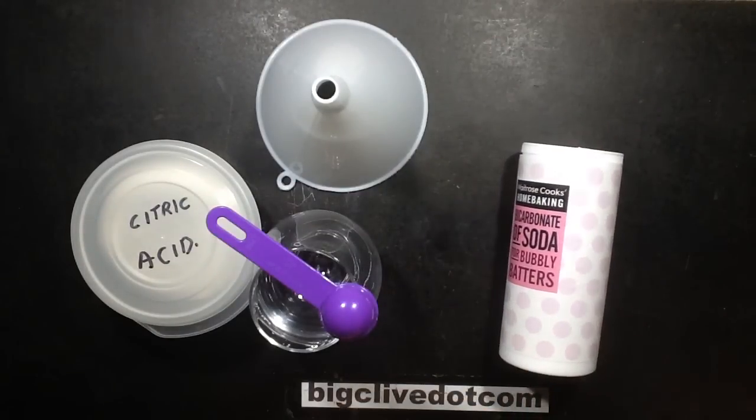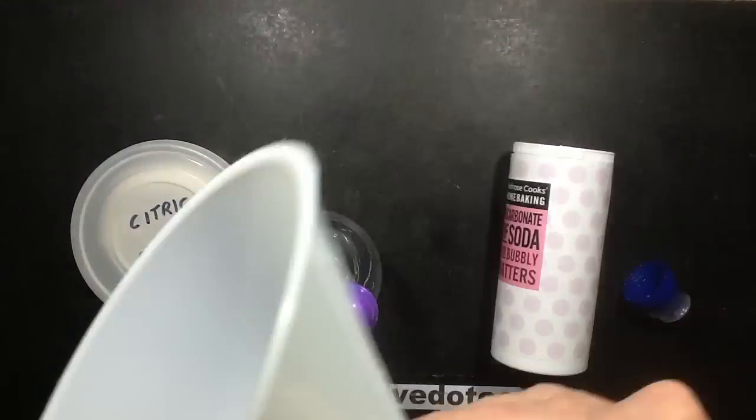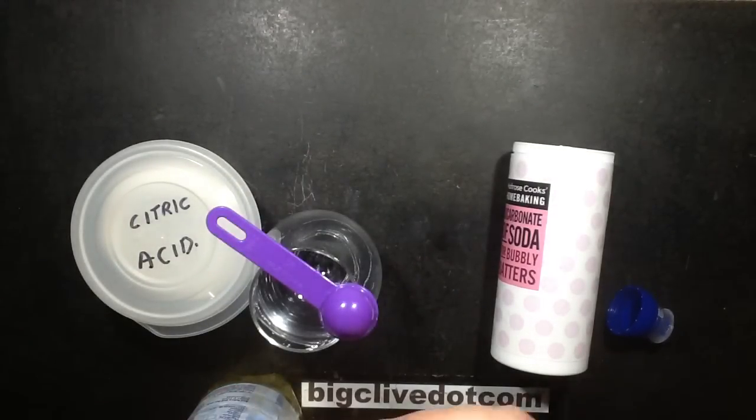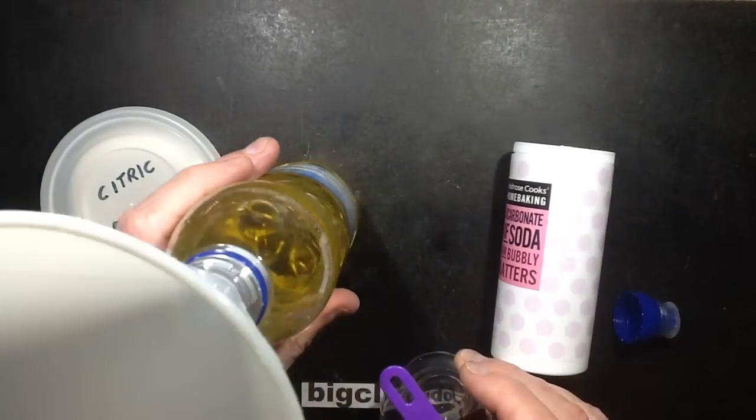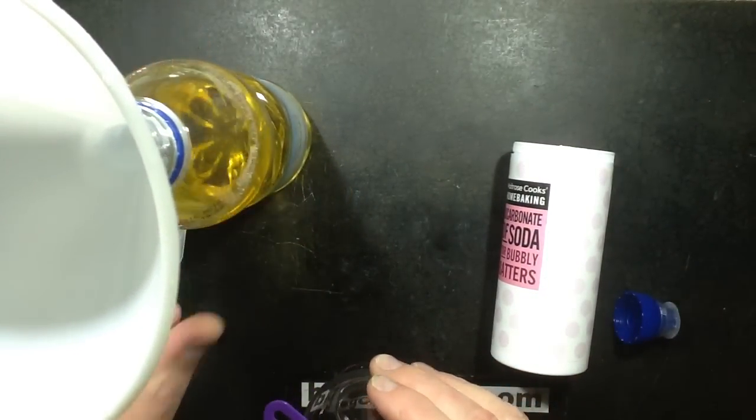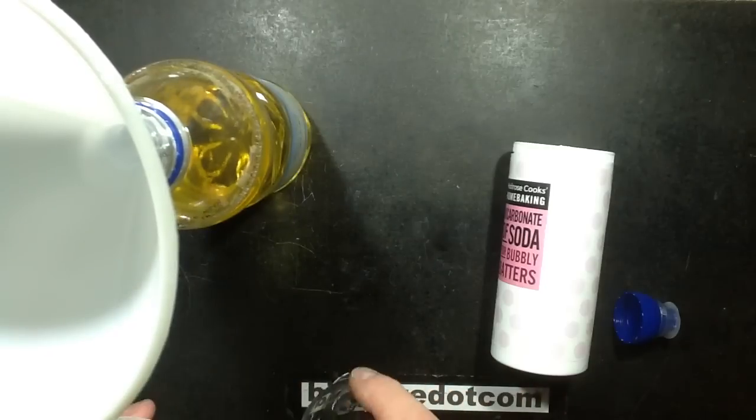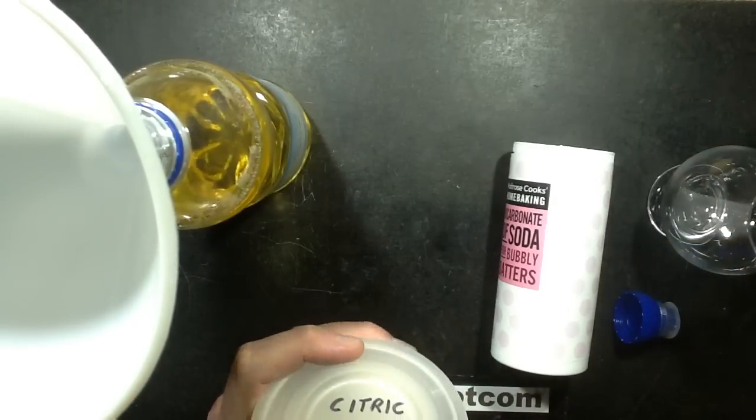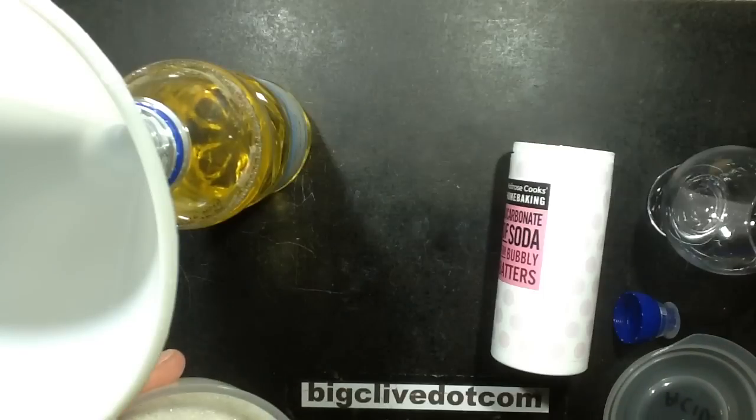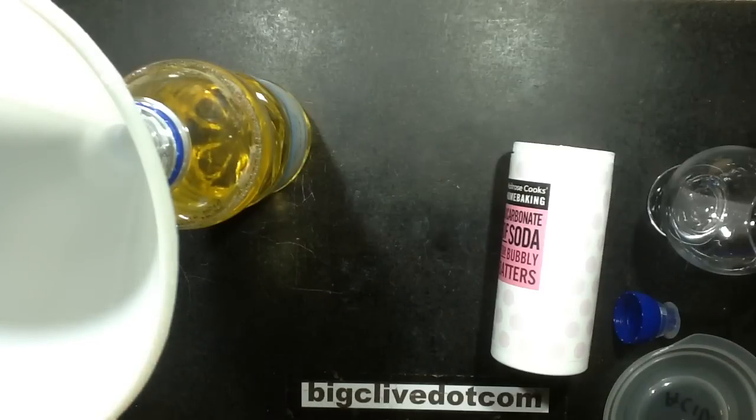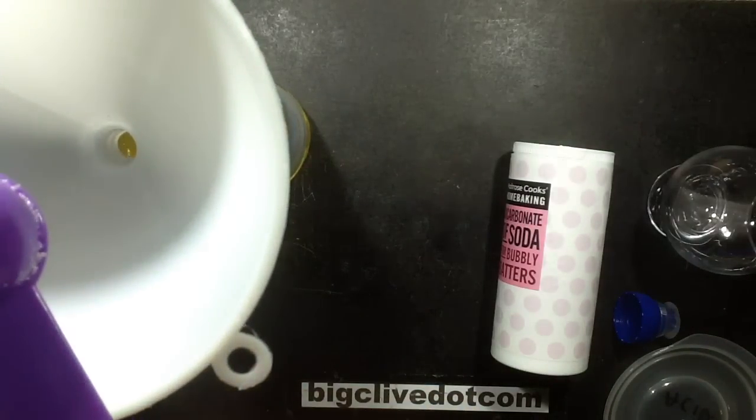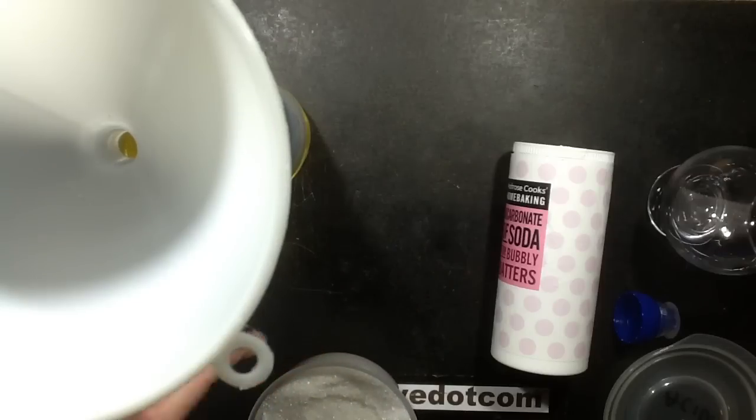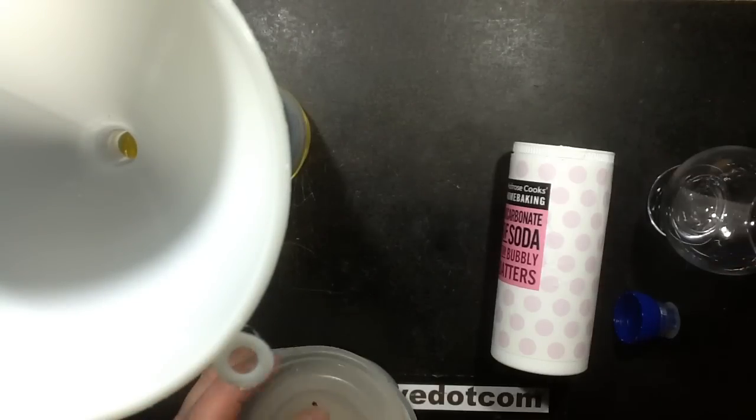So what I'm going to do, I'm going to put a generous scoop with this funnel of citric acid into the wine. I'm thinking citric acid is probably the best. I'm not sure if the bicarbonate of soda would react with the existing fruit acids in the wine, so in goes the citric acid. Nothing happens really significant, and then I'm going to put the bicarbonate of soda in.